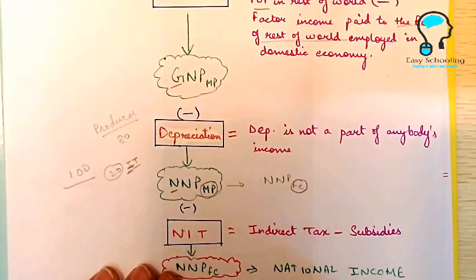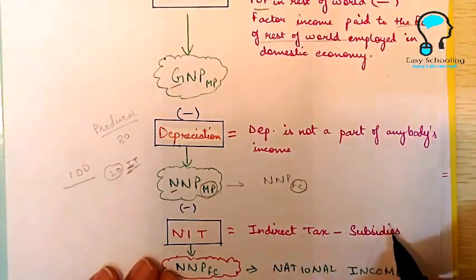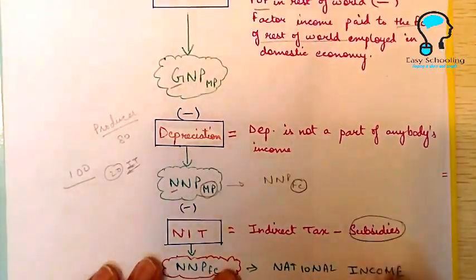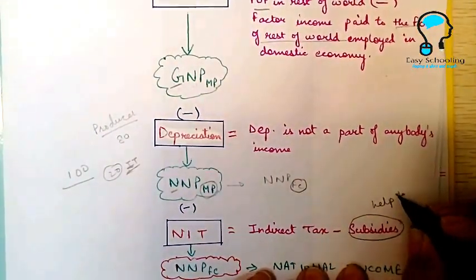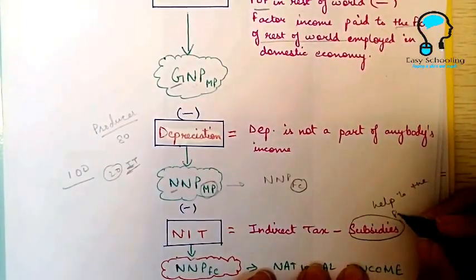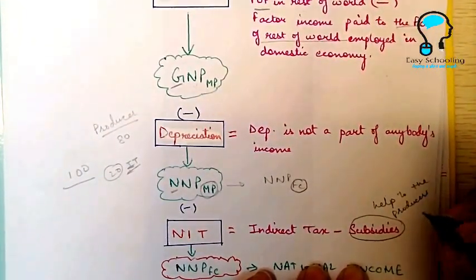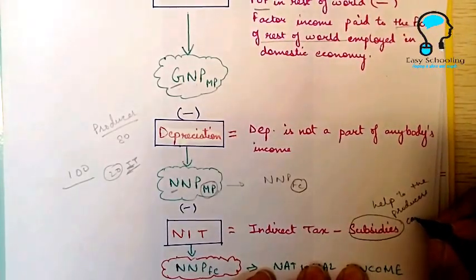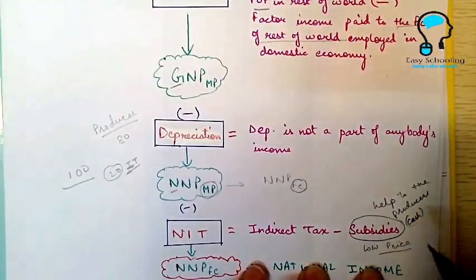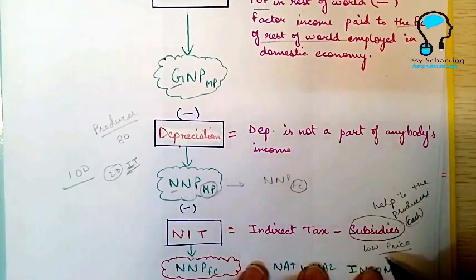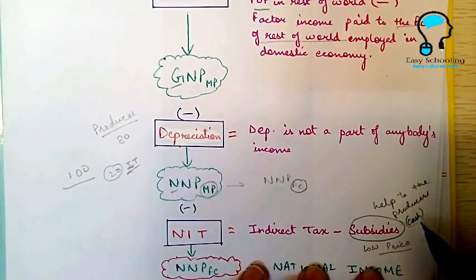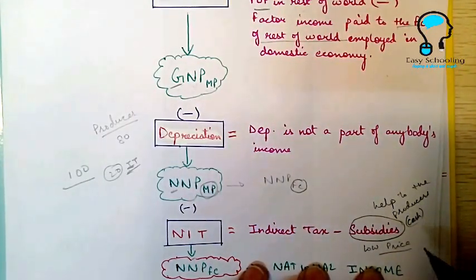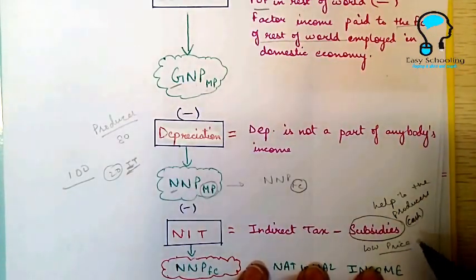Subsidy is a help to the producers in the form of cash. Subsidies are to encourage the producers as well as the consumers. How is it going to encourage the producer? Because government is going to give the subsidies to the producer in the form of cash or tax reduction or some soft loans.